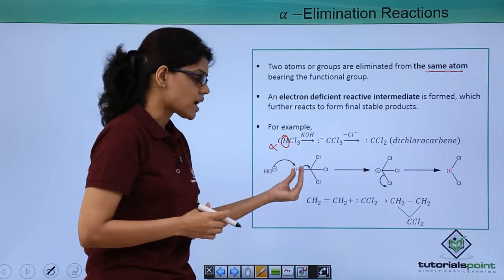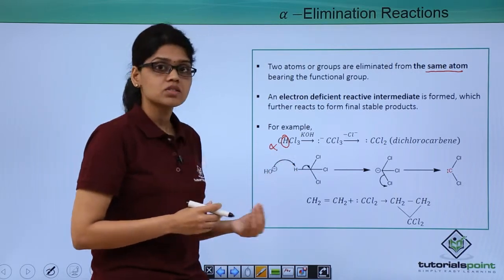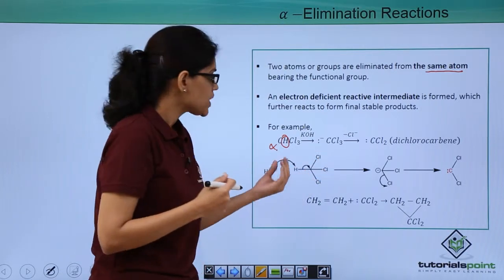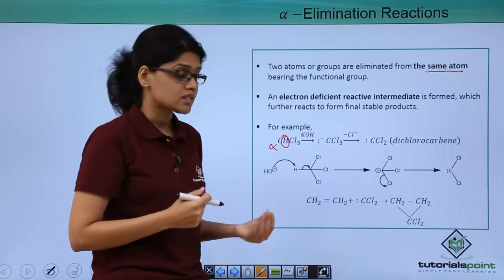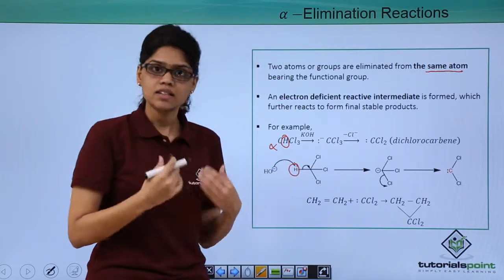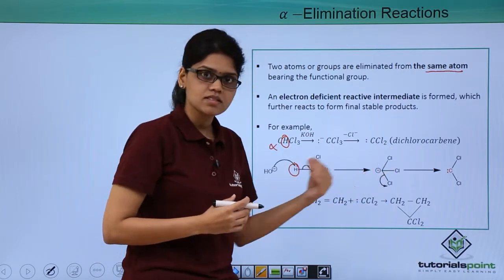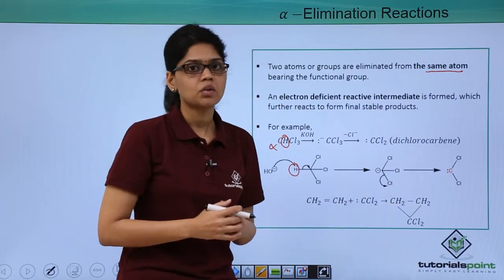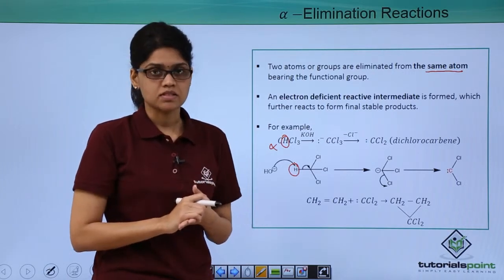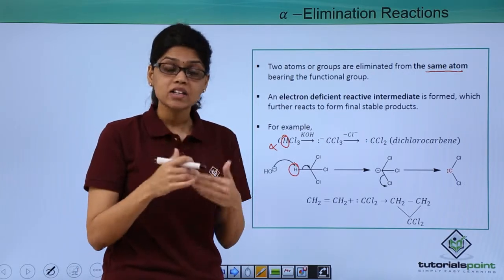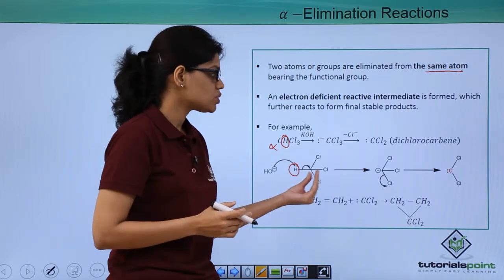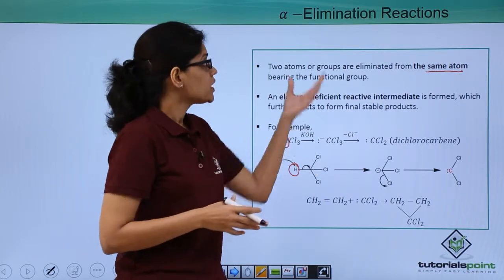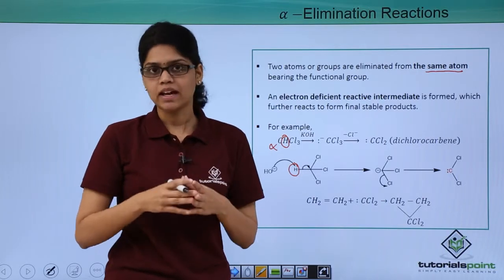You can see that OH minus abstracts this hydrogen because it is highly acidic — the 3 chlorine atoms are highly electron-withdrawing and draw electrons toward themselves, making abstraction of this hydrogen very easy. Consequently, the CCl3 minus ion is generated, from which another chlorine atom leaves, giving us CCl2, dichlorocarbene, which is an electron-deficient species. The 2 atoms getting eliminated — 1 hydrogen and 1 chlorine — are both from the alpha carbon, which is why this is called an alpha elimination reaction.